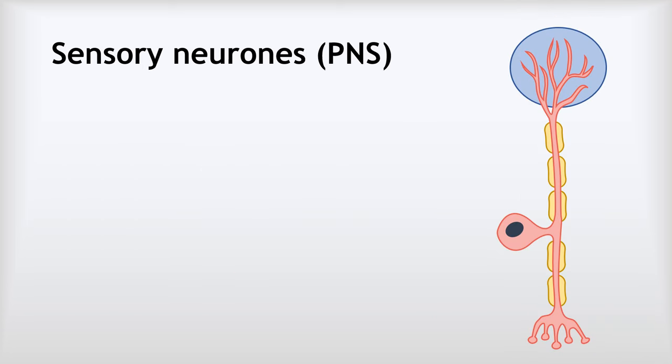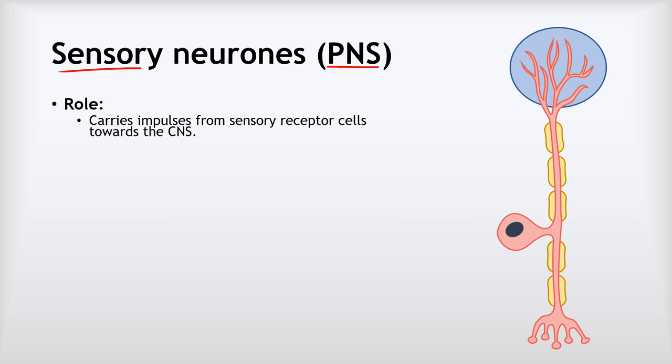The nervous system is made up of three types of nerve cell, or neuron: sensory neurons, relay neurons, and motor neurons. Let's start with sensory neurons. Sensory neurons are part of your PNS — your peripheral nervous system — and their role is to carry electrical impulses from sensory receptor cells towards the central nervous system.